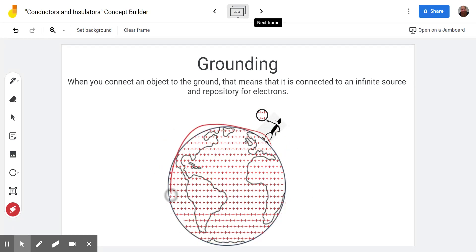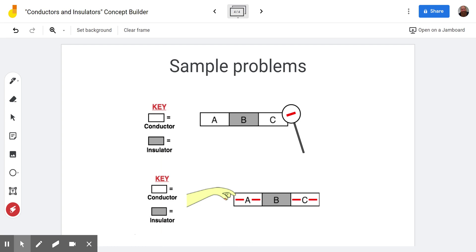Let's look at two examples here. In the first example, we see that there's going to be a negative object touching C here. We see the white colored ones are conductors and the gray colored ones are insulators.